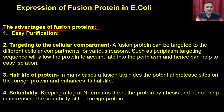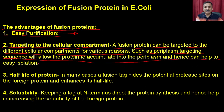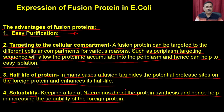The advantage of fusion proteins is easy purification — with affinity purification it can be a single-step purification. Sometimes tags are used to target a protein into a particular compartment; for example, periplasm-targeting sequences allow the protein to accumulate in the periplasm and hence aid easy isolation. Fusion tags can also modulate the half-life of the protein — in many cases a fusion tag hides potential protease sites present on the foreign protein and enhances its half-life. It can also increase solubility, as keeping the tag at the N-terminus helps in increasing the solubility of the foreign protein.